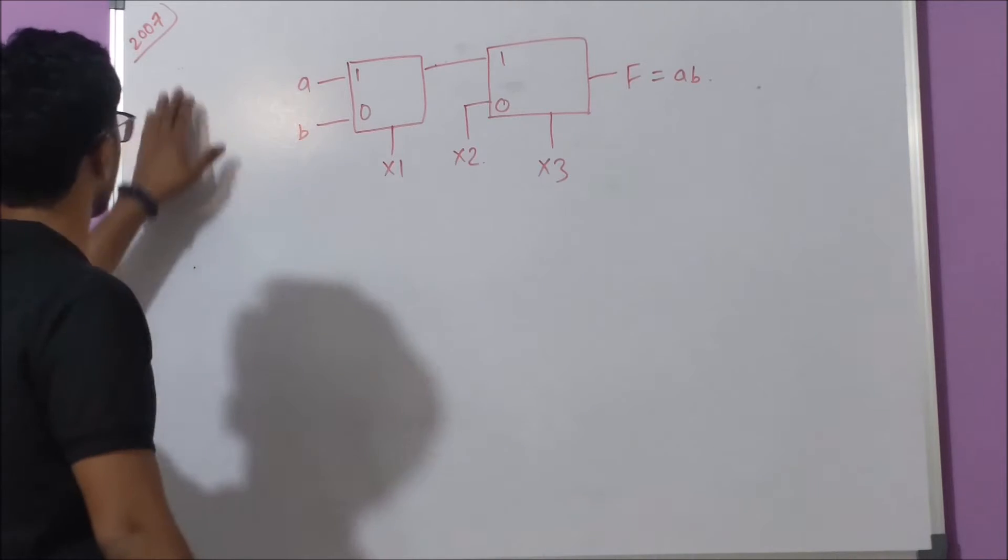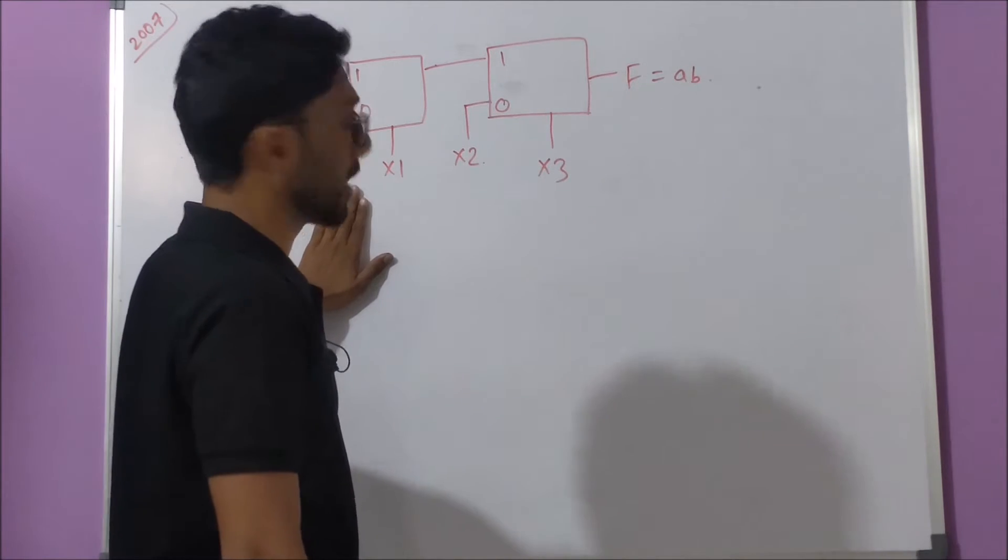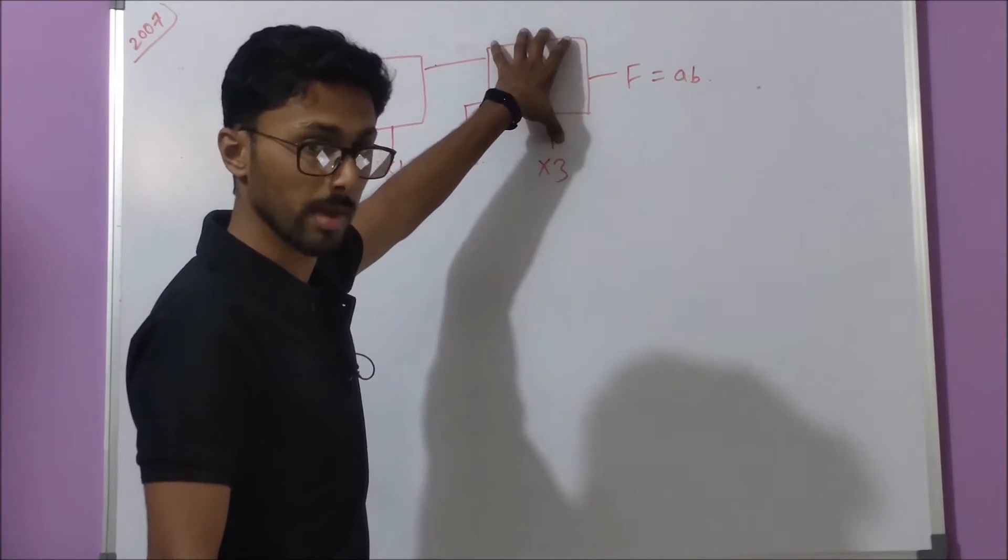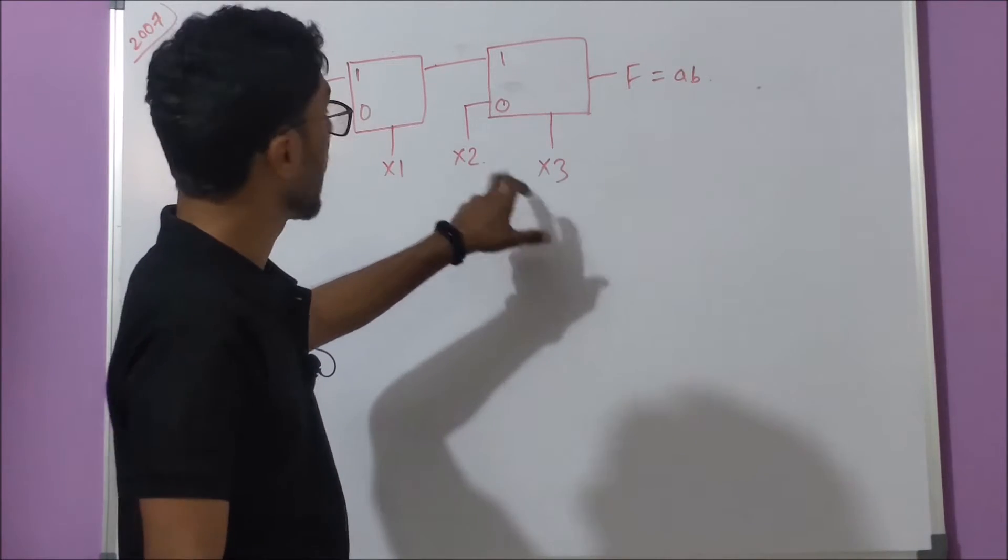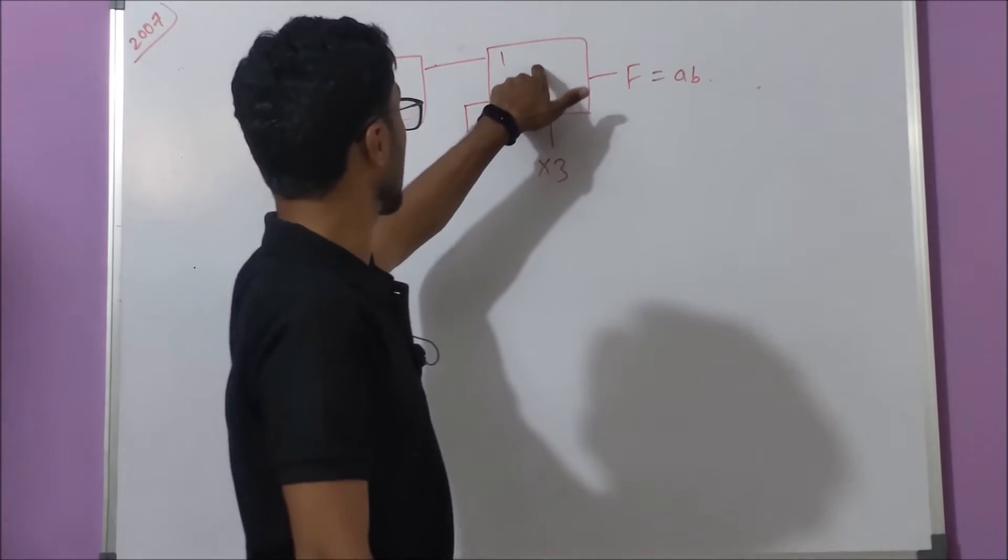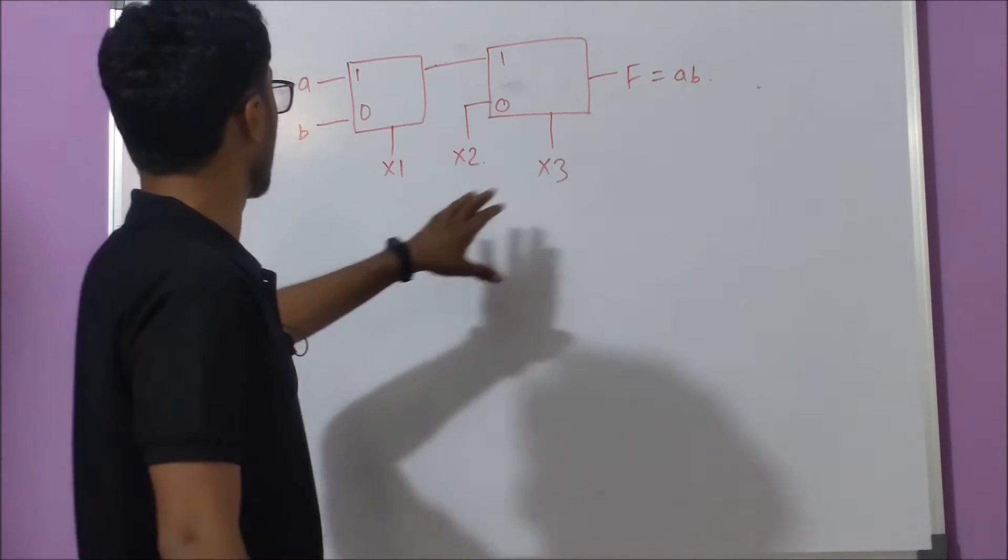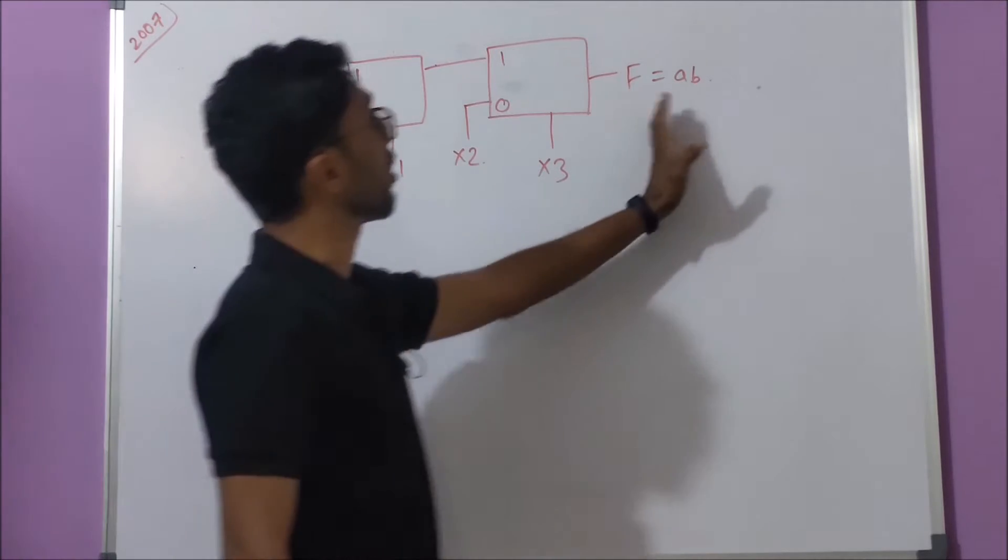So the next question was asked in GATE IT 2007, and the question was based on multiplexer. This is a 2-to-1 multiplexer, this is also a 2-to-1 multiplexer. These are select lines - x1, x3 are select lines. x2 is the second input of second multiplexer, and the final output is ab. The question was: what will be the combination of x1, x2, x3 so that we get output as ab?